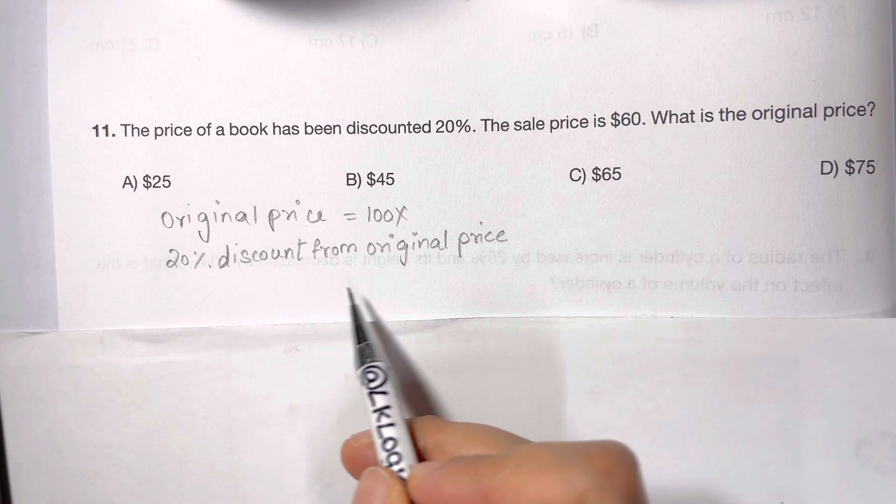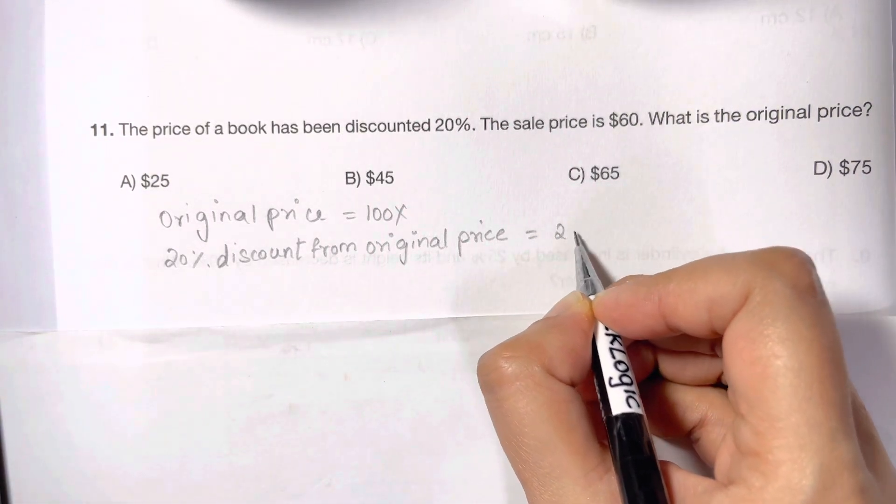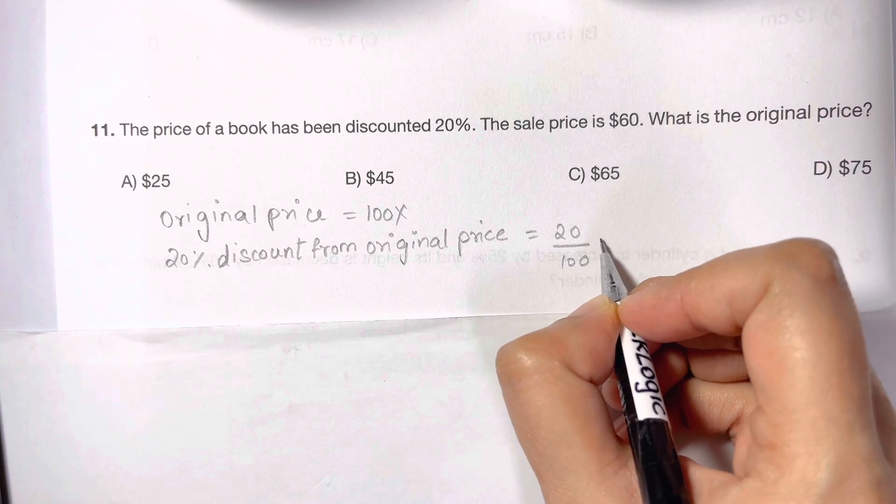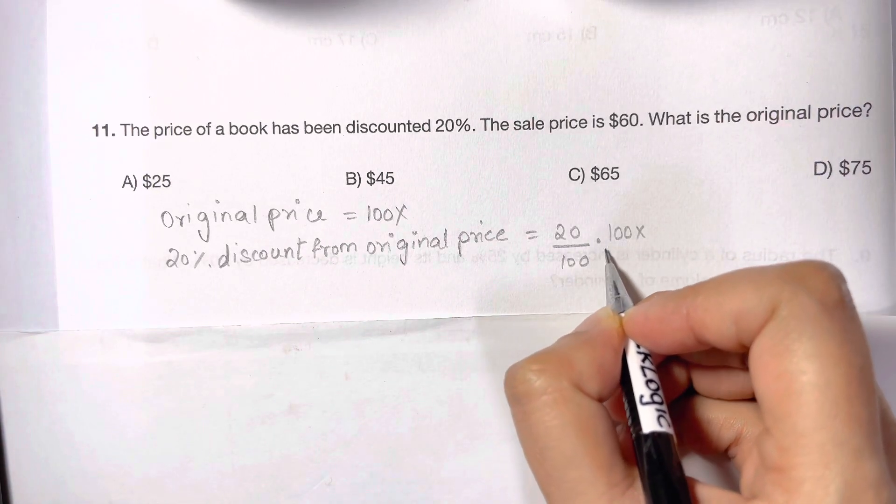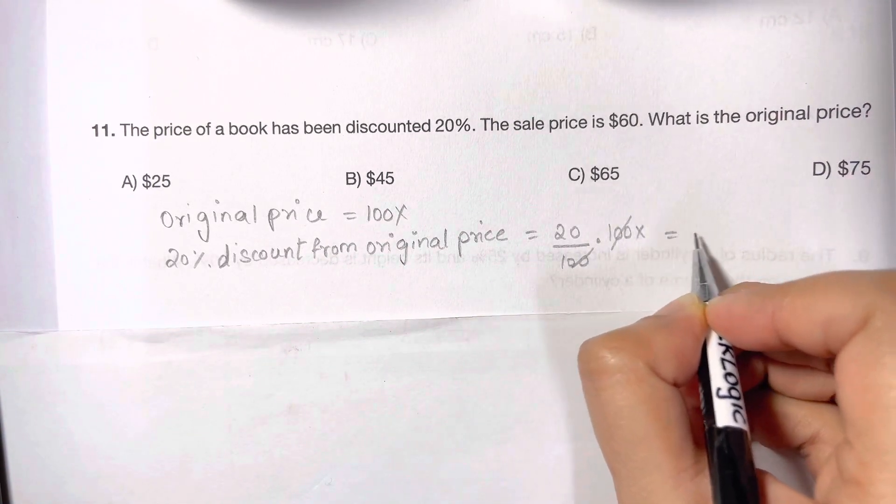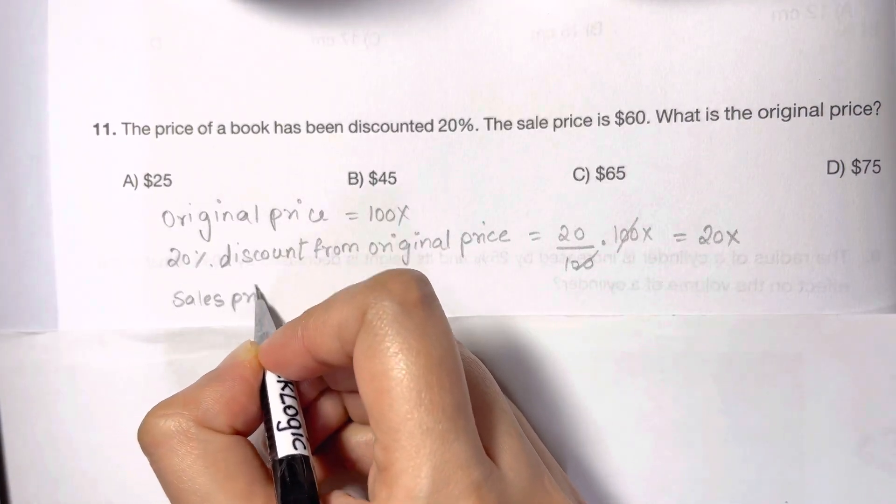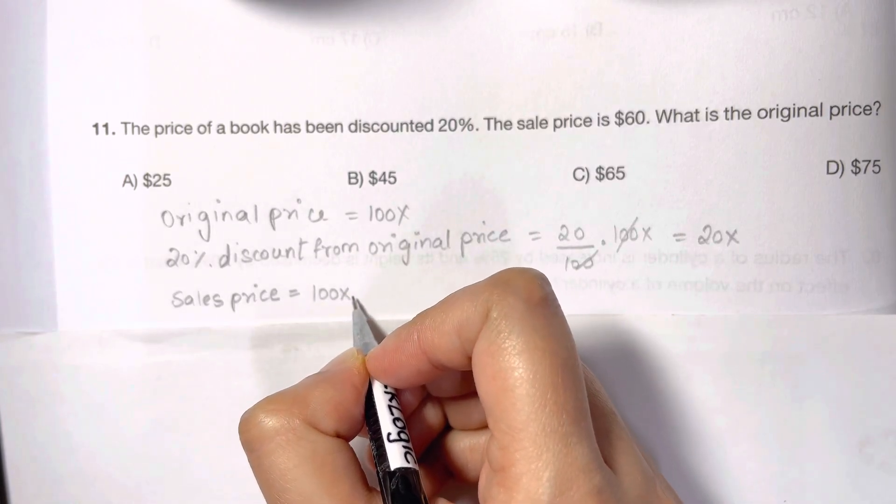So there's 20% discount from original price. That means you have 20/100 times 100x. You can cancel out the 100s and you're left with 20x. So the sales price equals 100x minus 20x, which is given as $60.